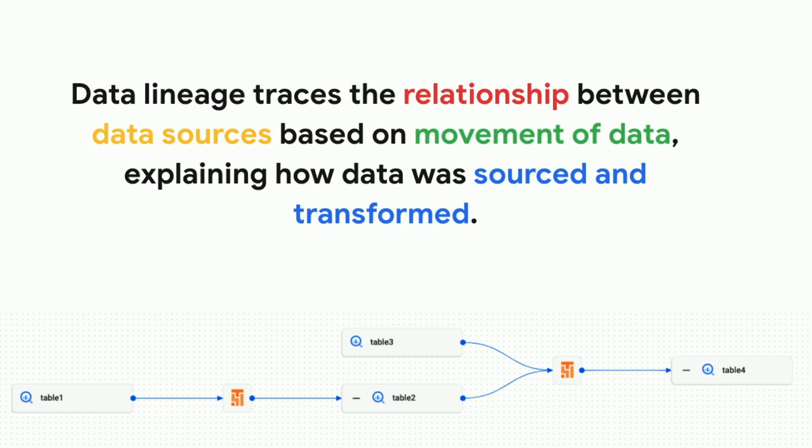Data lineage, as we define it, traces the relationship between data sources based on the data movements, explaining how data was sourced and transformed in each step. Cloud Composer, based on Apache Airflow, is one of the systems you can imagine transforming and orchestrating data, but there are obviously many more as the landscape of data processing is vast.